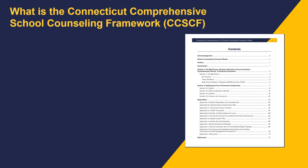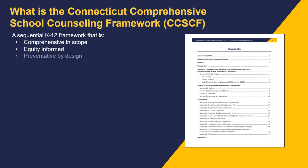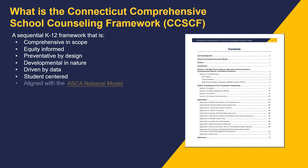The Connecticut Comprehensive School Counseling Framework is an articulated, sequential kindergarten through grade 12 framework that is comprehensive in scope and sequence, equity-informed, preventative by design, developmental in nature, driven by data, and student-centered. The Connecticut Framework model reflects a systemic approach to building an accountable and sustainable model based on the American School Counselor Association's four components: Define, Manage, Deliver, and Assess.